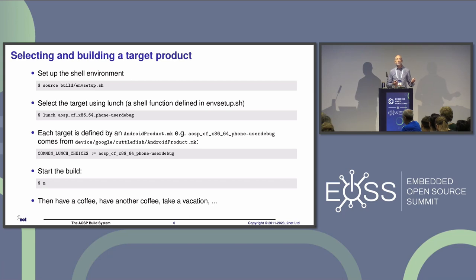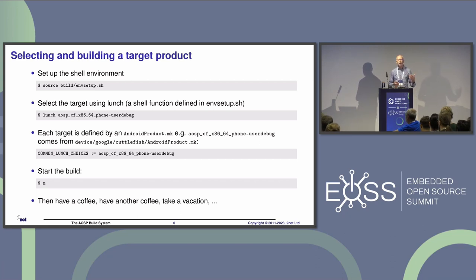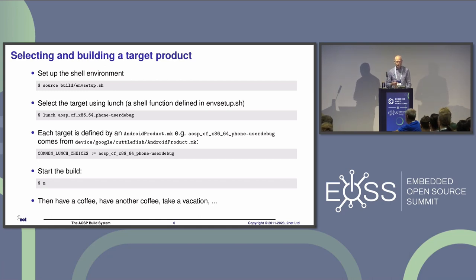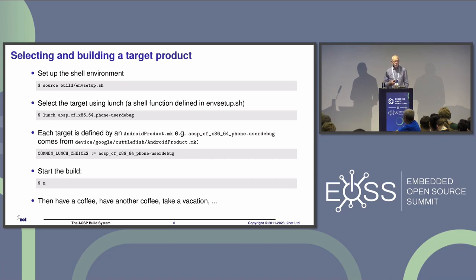Then you set up the shell environment by sourcing `build/envsetup.sh`. This includes shell functions, one of which is `lunch`. The `lunch` command lets you select a build target — basically a BSP. In my example, I'm building a Cuttlefish target for an x86 phone. These targets are defined in `androidproducts.mk` files. Going through the device directory, you'll find these files, which populate the lunch menu. Within them, you'll find `COMMON_LUNCH_CHOICES` assignments listing selectable products.